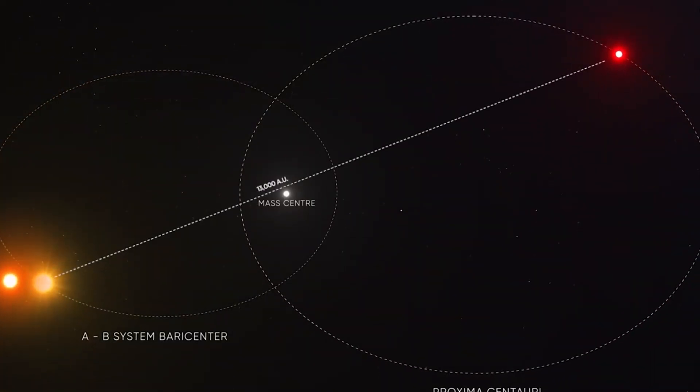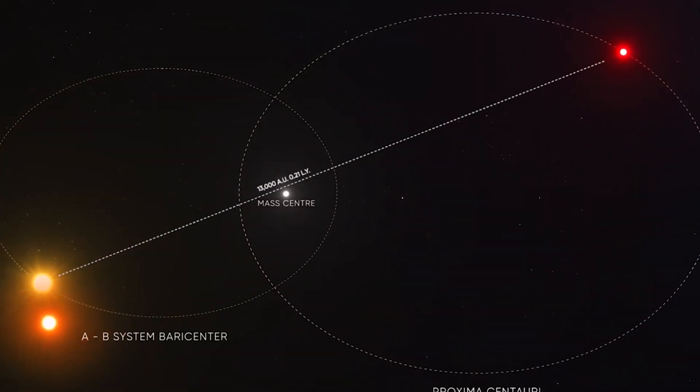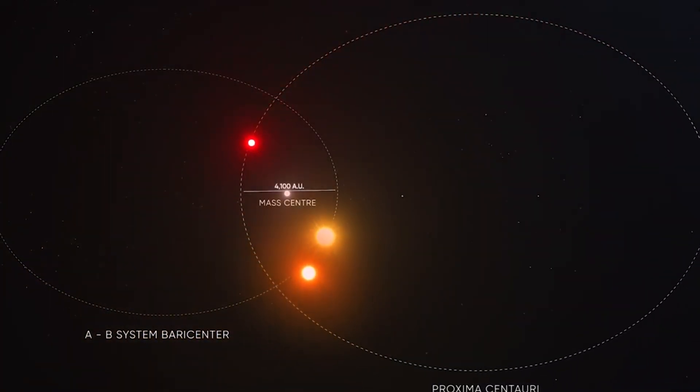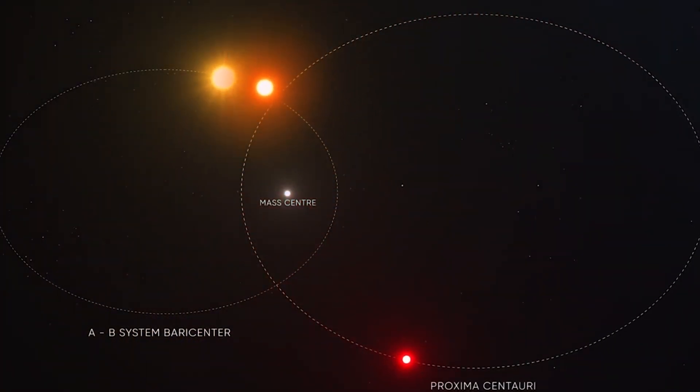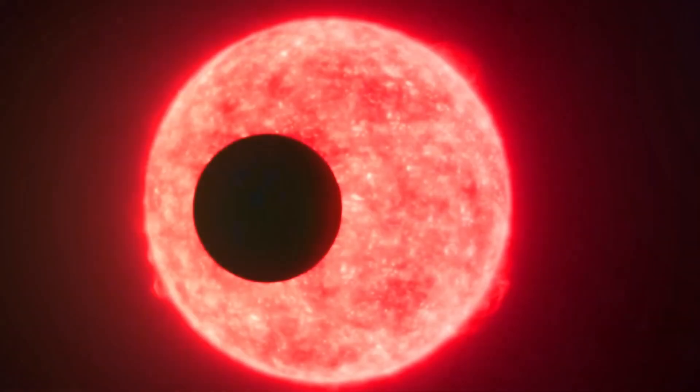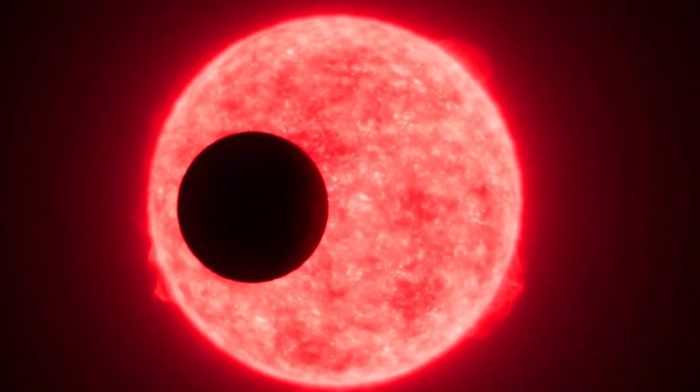The other two stars are Alpha Centauri A and B, which share a center of gravity. Scientists are not sure whether Proxima Centauri orbits around the pair or simply in the same neighborhood.